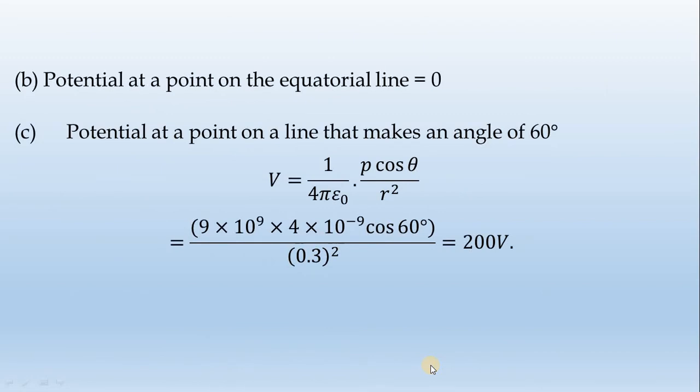Now for the axial line, then the equatorial line: the potential of the dipole is 0.